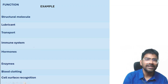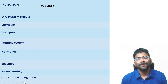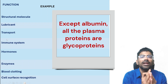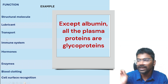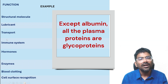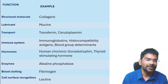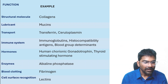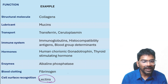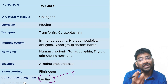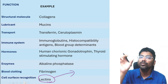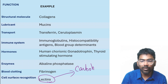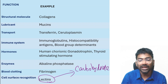Examples of glycoproteins include: all plasma proteins except human albumin are glycoproteins. Collagen and mucin are also glycoproteins. Lectin is a protein that binds to carbohydrate moieties — lectins are carbohydrate-binding proteins.